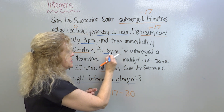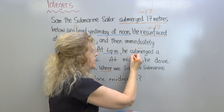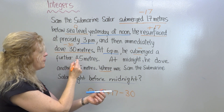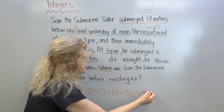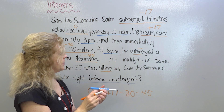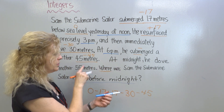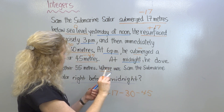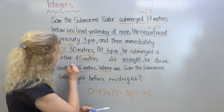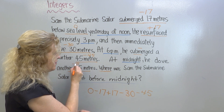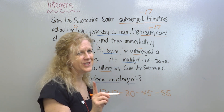At 6 p.m. he submerged — in other words, he went down, so this is a minus — another 45 meters. So you have minus 45, and you put that in the equation. Then it says at midnight he dove another 55 meters. So that would be minus 55. You would put that at the end. Now let's read the question and see what it says.